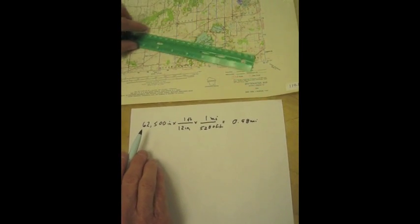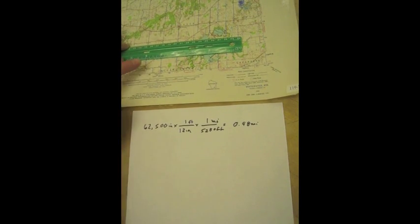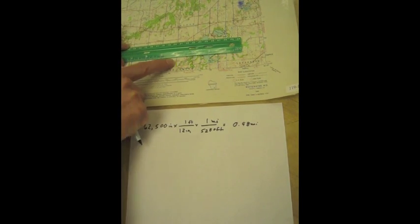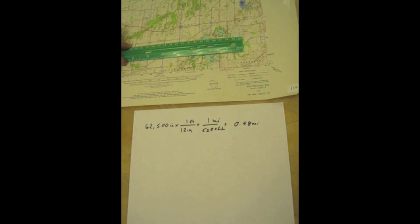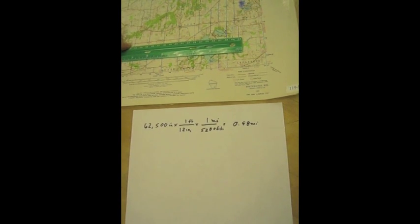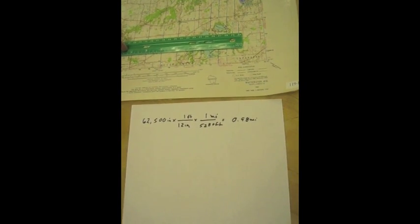So that 1 inch on my map now equals just about 1 mile. And that's the width of that section right there. So the verbal scale is much handier to use compared to the fractional scale.